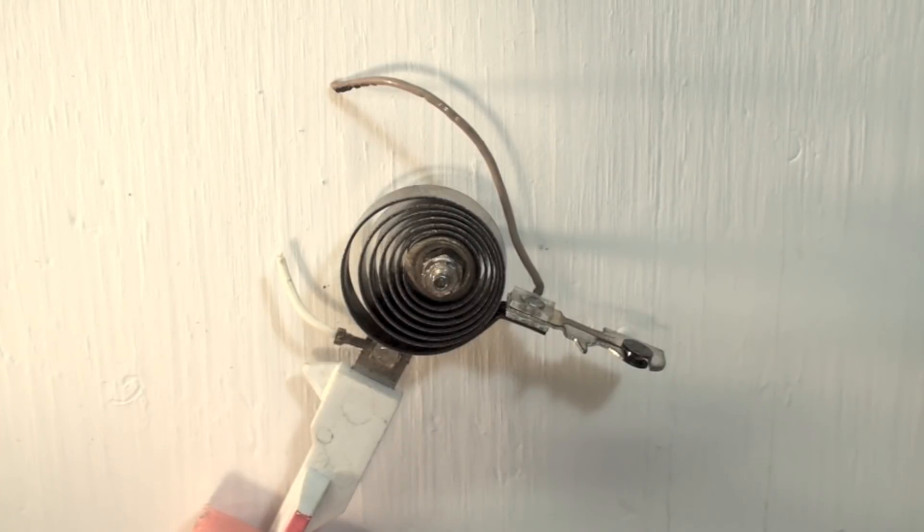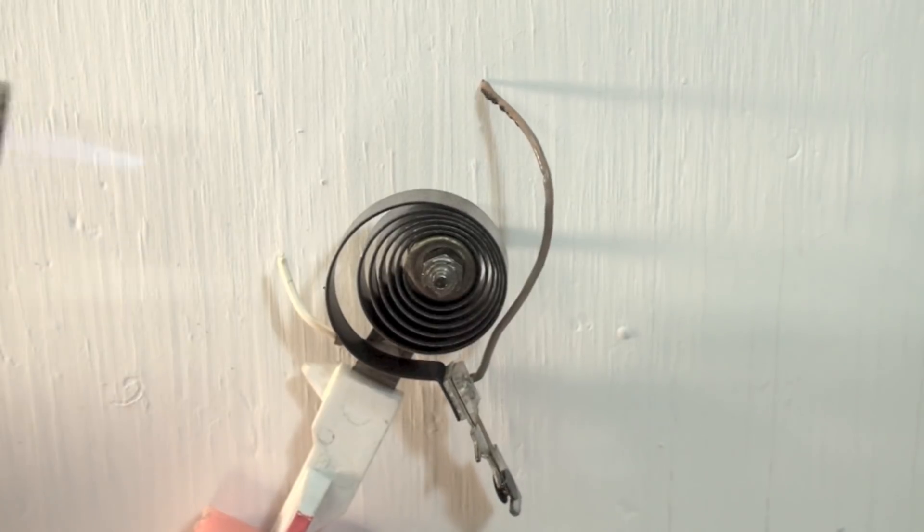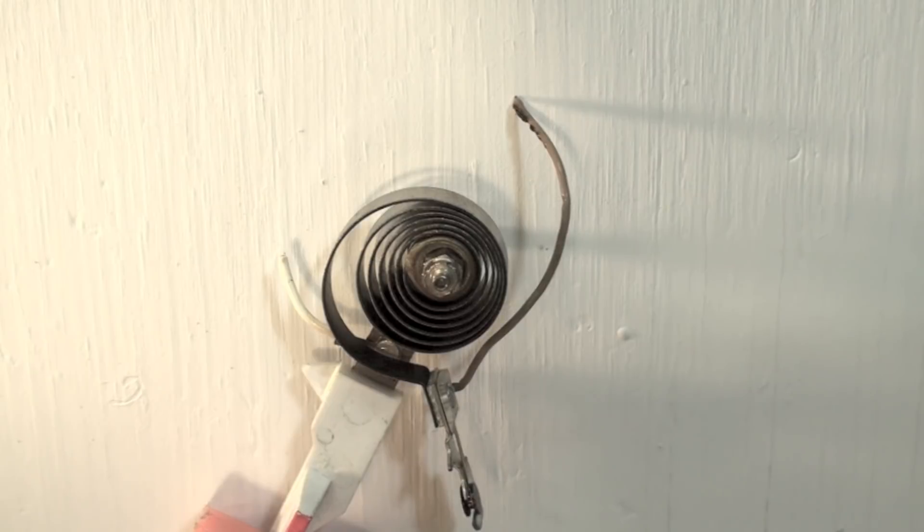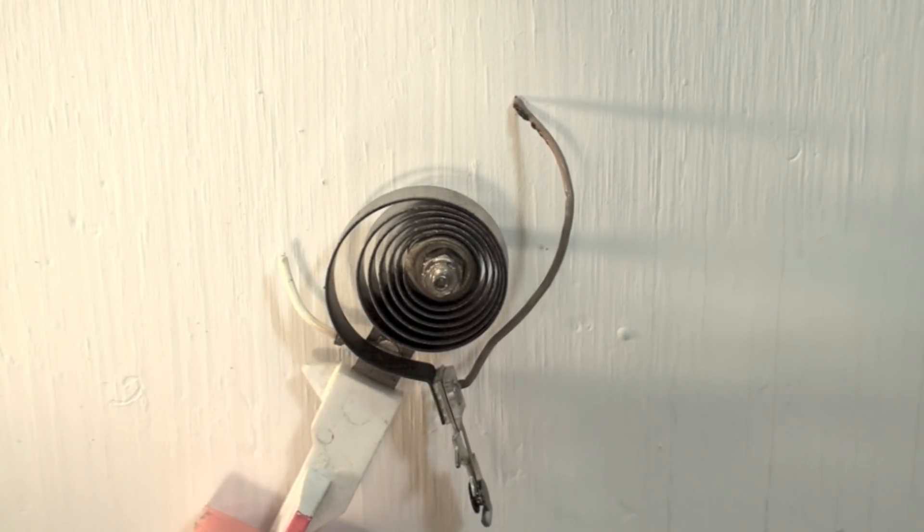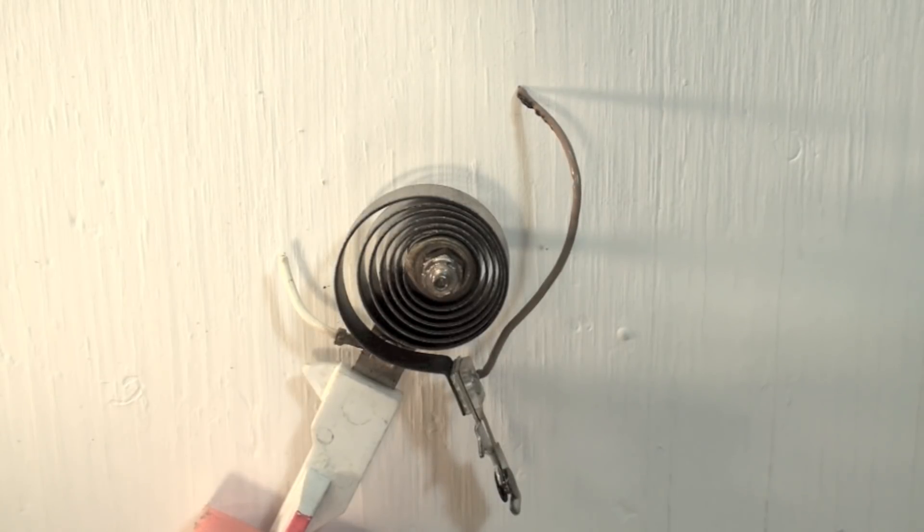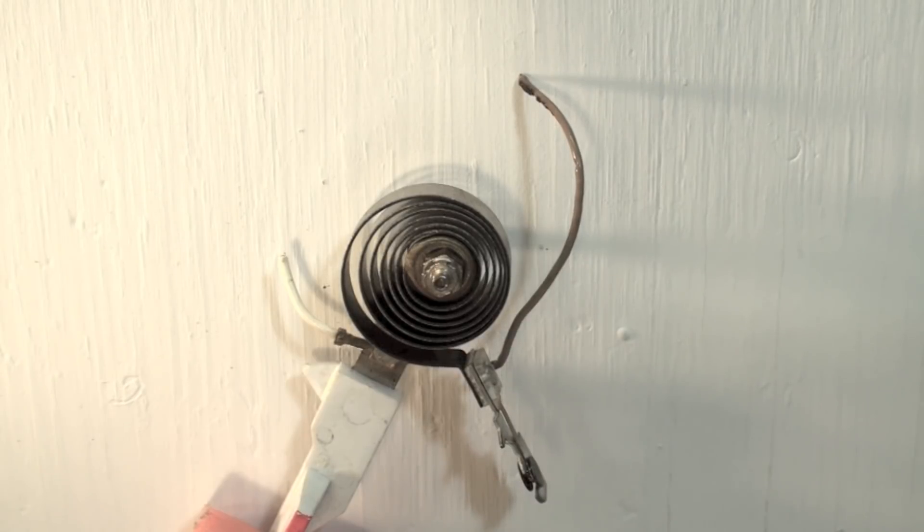You can see I've heated one side of it. Now as that cools it's going to move back down, and if I haven't overheated it it'll move back more or less to the same place it was before. The reason for the spiral of course is it makes a longer length of bimetal.